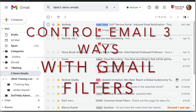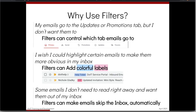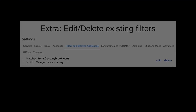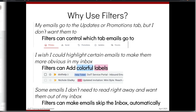We're going to talk about how you can use filters in Gmail for three different things: to help your emails go to the tab you want, to add colorful labels to highlight messages in your inbox, and to have messages skip your inbox if you don't need to see them right away. We'll also look at editing and deleting existing filters.